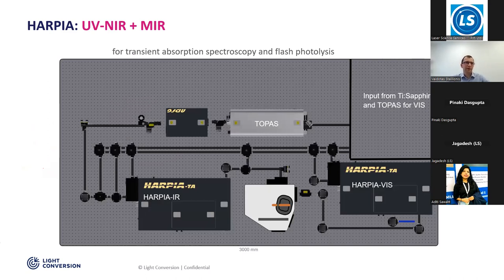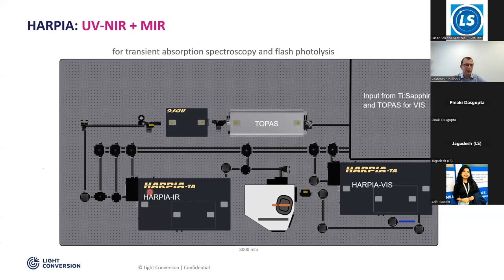A more complex system layout allows two simultaneous measurements covering two wavelength ranges: one is the Harpia visible to near-infrared, up to 1.6 microns, and the other extends from 1.6 up to around 10 to 15 microns using different single-point detectors. The laser and one OPA sit on one table side, and you split some power to generate a second OPA output mainly for the infrared, enabling measurement over a very broad spectrum.